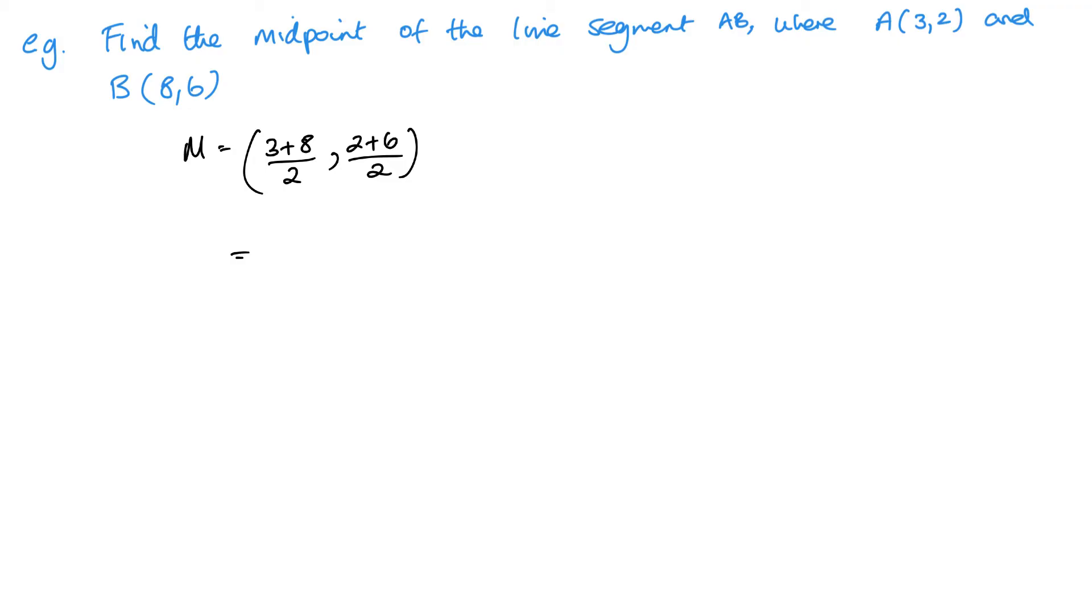So, I've got 3 plus 8 is 11, divided by 2 is 5.5. I'm going to leave it as a fraction, 11 over 2. And then my y is 2 plus 6, which is 8, divided by 2, which is 4. And that is the midpoint of AB.